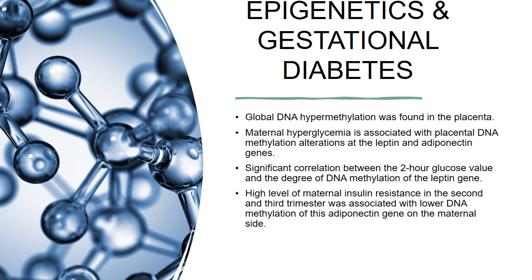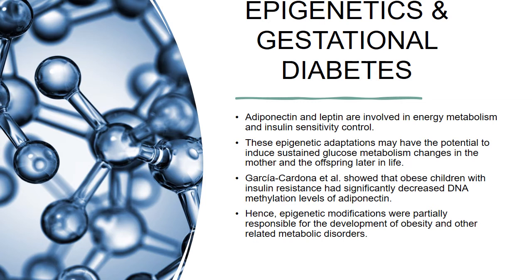Maternal hyperglycemia is associated with placental DNA methylation alterations at the leptin and adiponectin genes. A significant correlation between the two-hour glucose value and the degree of DNA methylation of the leptin gene was found. High level of maternal insulin resistance in the second and third trimester was associated with lower DNA methylation of the adiponectin gene on the maternal side. Adiponectin and leptin are involved in energy metabolism and insulin sensitivity control. These epigenetic adaptations may have the potential to induce sustained glucose metabolism changes in the mother and the offspring later in life. Garcia Cardona et al showed that obese children with insulin resistance had significantly decreased DNA methylation levels of adiponectin; hence epigenetic modifications were partially responsible for the development of obesity and other related metabolic disorders.